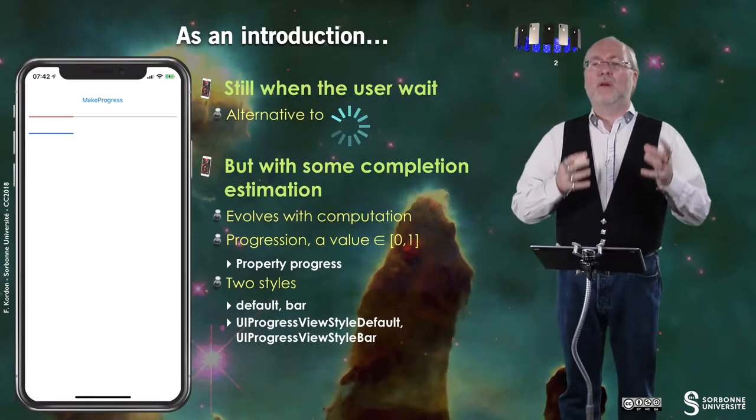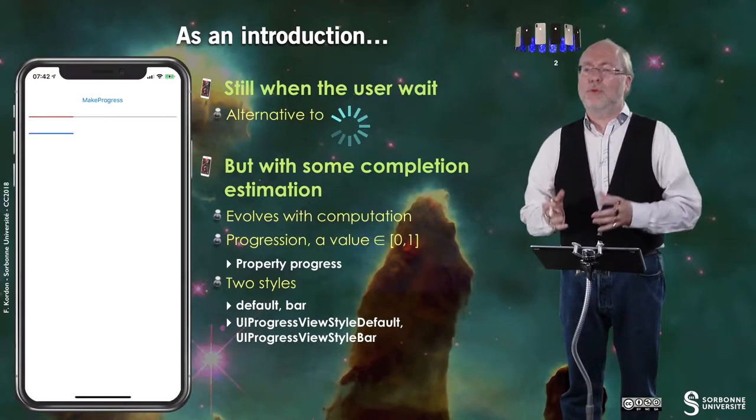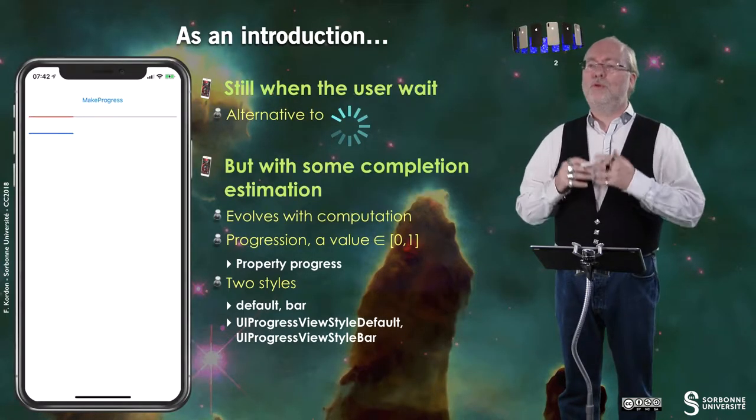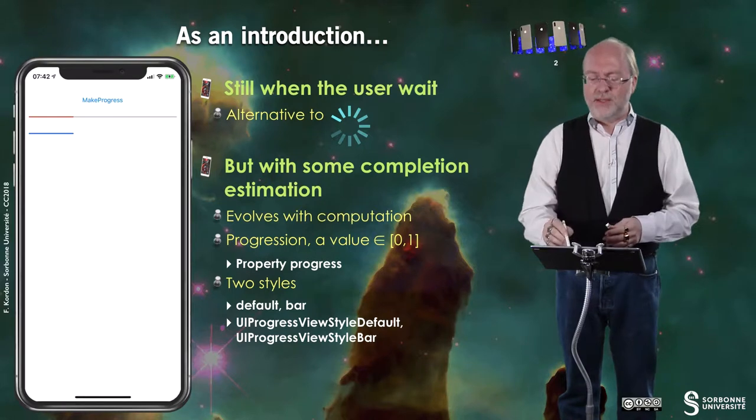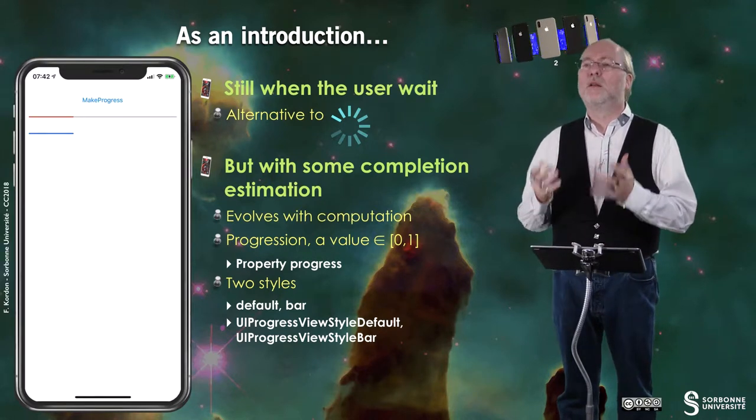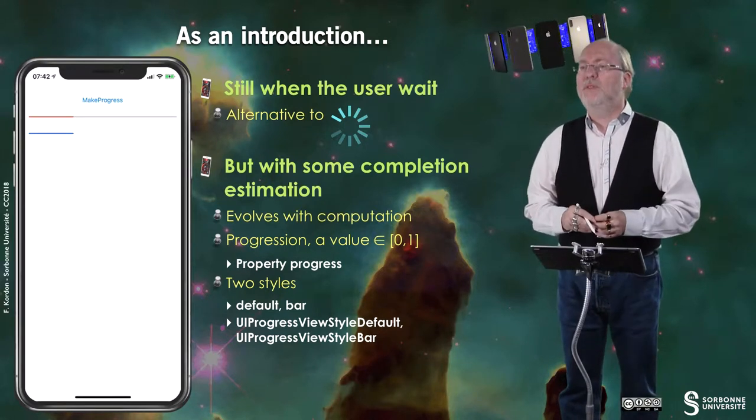Hello everybody! In this video, I will present you what is a UI progress view. When your app lets a user wait, you have an alternative to the traditional activity wheel that allows you to show the user how far from completion it is.